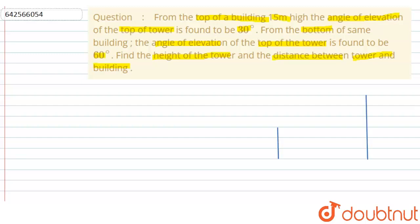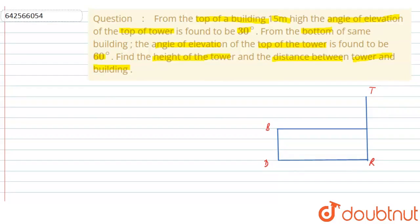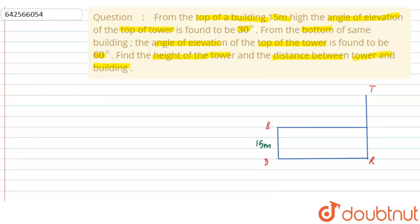Let's first draw the figure. Let this be the building, named BD, and let this be the tower, named TR. It is given that the height of the building is 15 meters, so this will also be 15 meters. We will name this point W, so WR = BD = 15 meters. Let's name the distance between the tower and building as x.